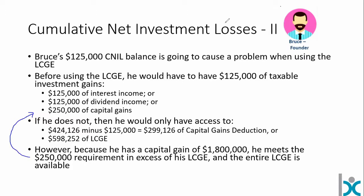CNIL is not something you run into all that often, but it is something James and the accountant should be asking about. Hey Bruce, can you check your online CRA account and make sure you don't have a CNIL balance? James should have a pretty good idea about this — he should already know about Bruce's half million dollars borrowed and all that goes along with that.